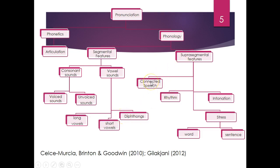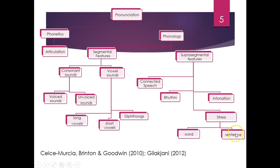Suprasegmental features include connected speech, which is also called linking or catenation; rhythm, which is related to the musicality of the language; intonation, which is about rising and falling for questions and statements; and stress, which is divided into word stress and sentence stress. For example, the word 'diphthongs' has stress on the first syllable, but in the sentence 'Carolina teaches English class,' where is the sentence stress? This information is according to Celce-Murcia, Brinton and Goodwin in 2010, and Gilakjani in 2012.